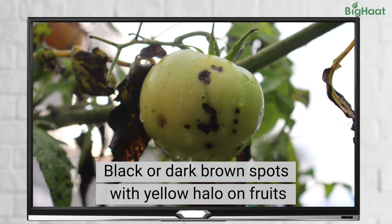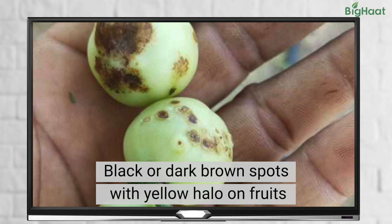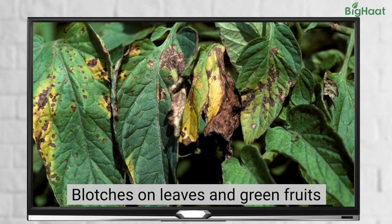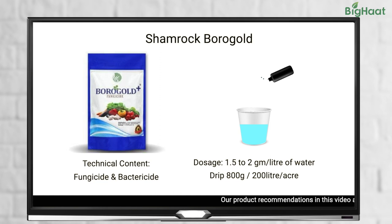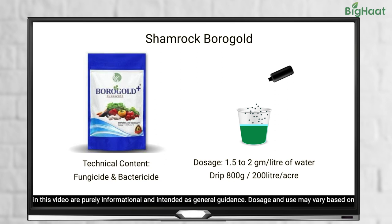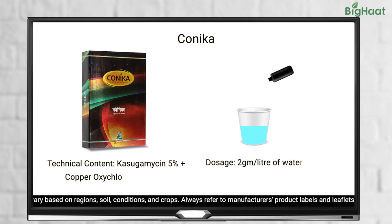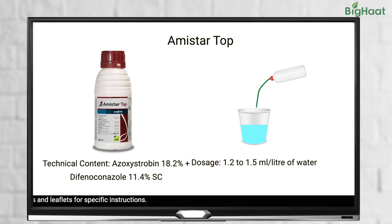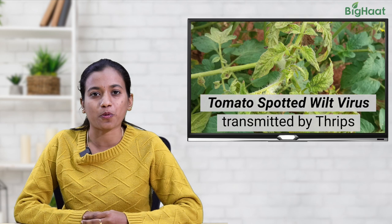Next is bacterial leaf spot, which occurs during the rainy season or wet weather conditions. It is characterized by black or brown leaf spots surrounded by a yellow halo, and fruits turning yellow or light green. Larger leaf blotches appear especially on the margins of leaves. Treatments include Shamrock Overseas Borogold at 1.5–2 grams per liter, Conica at 2 grams per liter, or Amistad Top at 1.2–1.5 ml per liter of water.